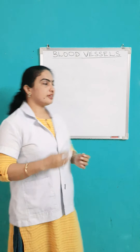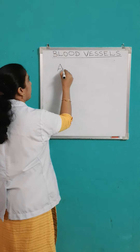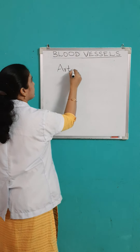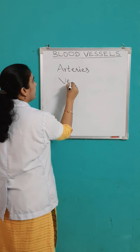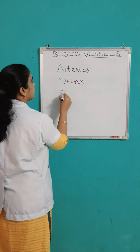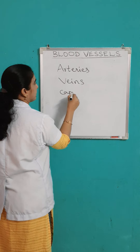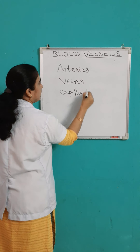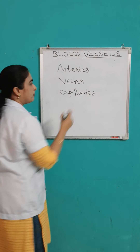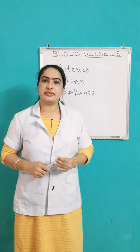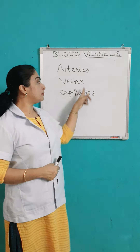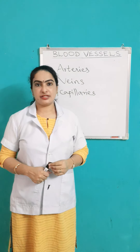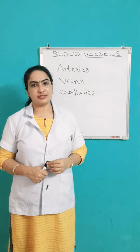The blood vessels are of three types. They are arteries, veins, and capillaries. These are the three main blood vessels in the human circulatory system, through which the blood flows in the body.